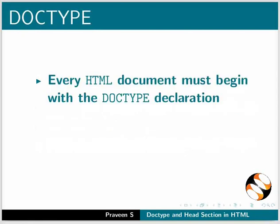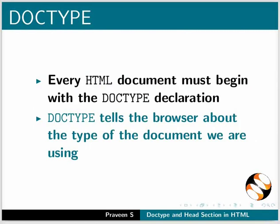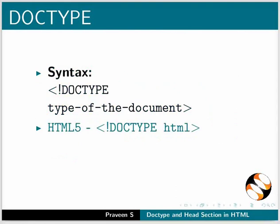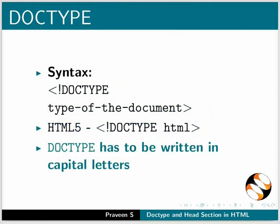Every HTML document must begin with the DOCTYPE declaration. DOCTYPE tells the browser about the type of the document we are using. This is the syntax. For HTML5 we have to type DOCTYPE html. The word DOCTYPE has to be written in capital letters.